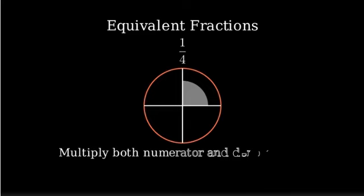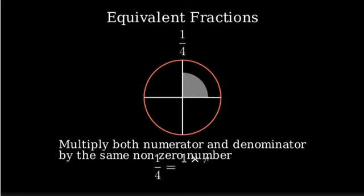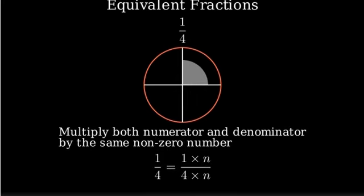To find equivalent fractions, we multiply both the numerator and denominator by the same non-zero number. This is like dividing each piece into smaller equal parts while taking the same proportion of the whole.